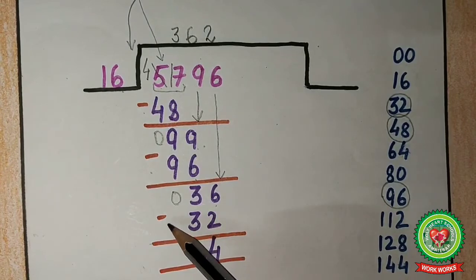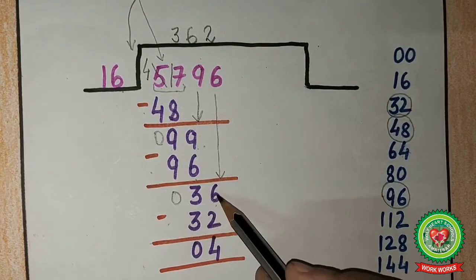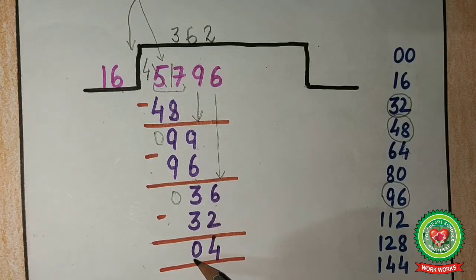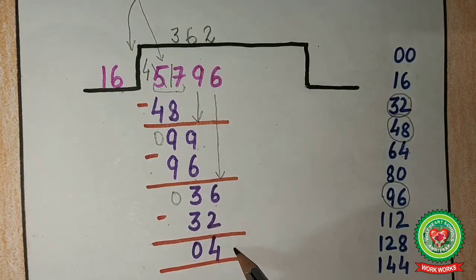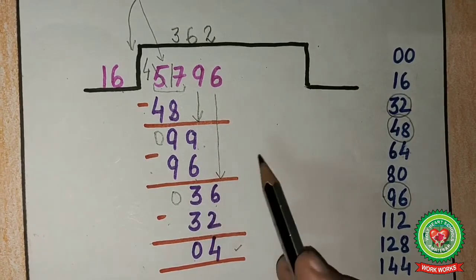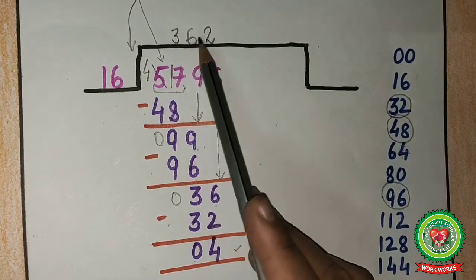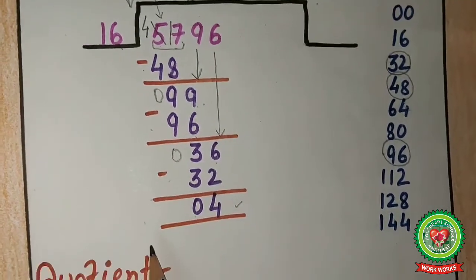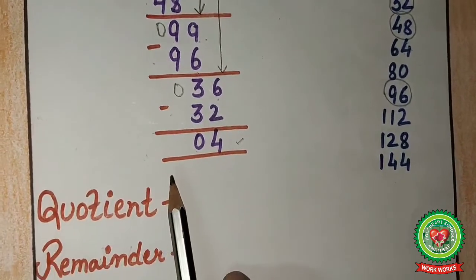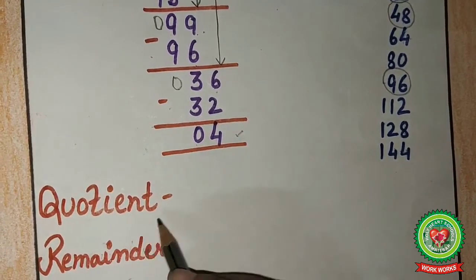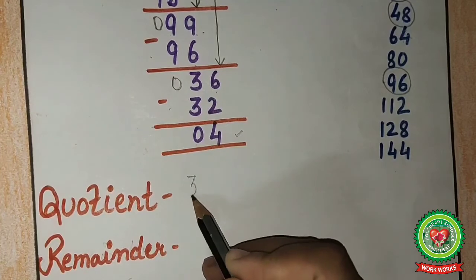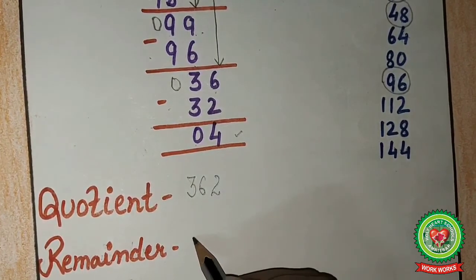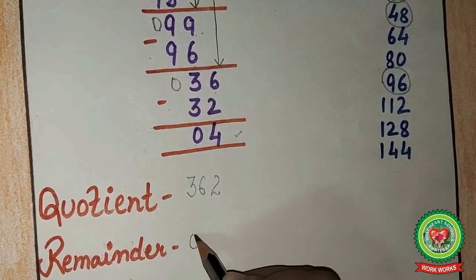Next step is subtract: 6 minus 2 is 4, and 3 minus 3 is 0. So the remainder is 4, and the quotient is 362. Write it down: the quotient is 362 and the remainder is 4.